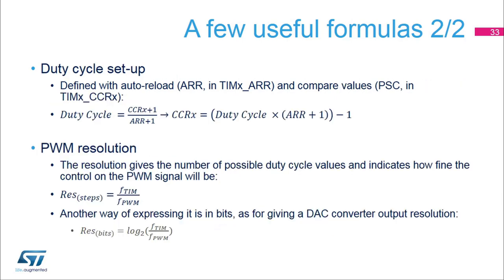This slide explains how to program a duty cycle for a given PWM frequency. This parameter is defined using the auto-reload value ARR in the TIMX_ARR register and the compare value in the TIMX_CCRX register. The duty value is given by (compare value + 1) over (auto-reload value + 1). The PWM resolution gives the number of possible duty cycle values. Expressed in duty cycle steps, it equals the ratio between the timer clock frequency and the PWM frequency, minus 1. In bits, the resolution is the base 2 logarithm of that same ratio.